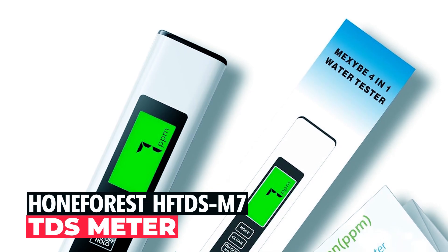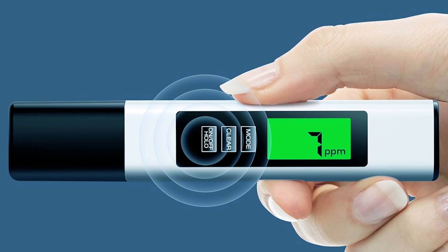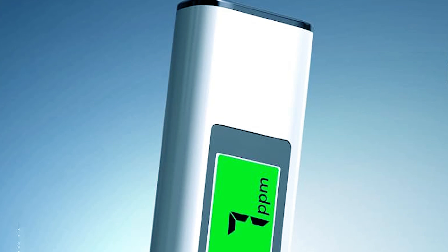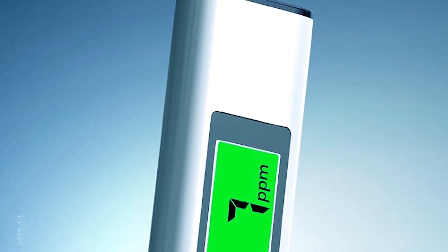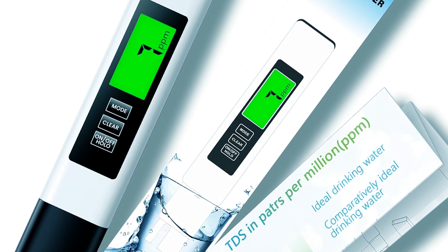MECSYB TDS Meter. The MECSYB TDS Meter is a high-precision, 4-in-1 instrument that measures total dissolved solids, electrical conductivity, and temperature in both Celsius and Fahrenheit. Equipped with a premium-quality titanium alloy probe and a high-precision chip, it delivers accurate and reliable readings.